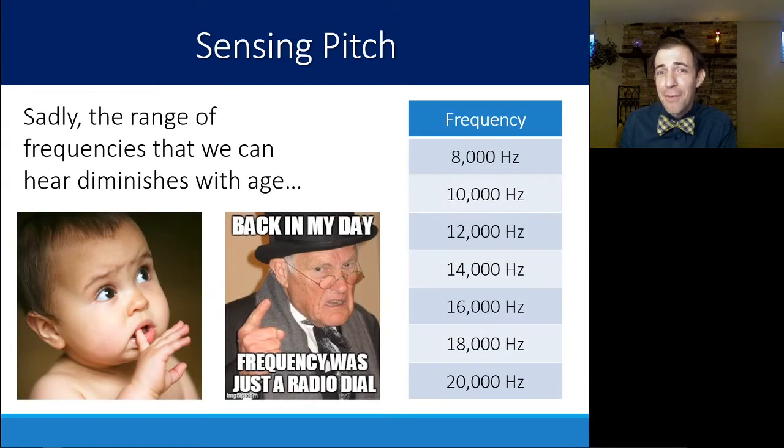That frequency that we can experience changes as we age. A human has a hearing range, kind of baseline, roughly 20 hertz to 20,000 hertz. 20 hertz is something vibrating 20 times every second, which seems pretty fast, but in terms of sound that's really really slow. That's almost slow enough that you could see it in a subwoofer moving back and forth.